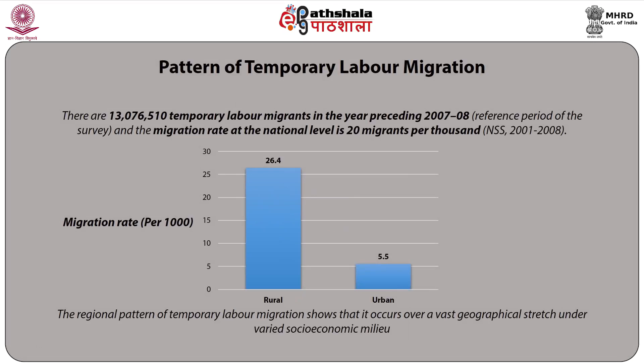There are 13 million temporary labor migrants in the year preceding 2007–2008, the reference period of the survey, and the migration rate at the national level is 20 migrants per thousand. The migration rate for rural areas is quite higher at 26.4 per thousand compared to urban areas at 5.5 per thousand. The regional pattern of temporary labor migration shows that it occurs over a vast geographical stretch under various socioeconomic conditions.